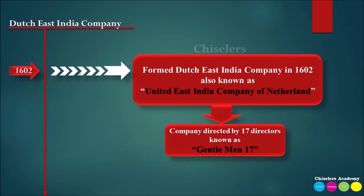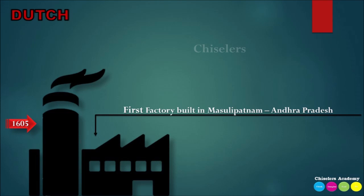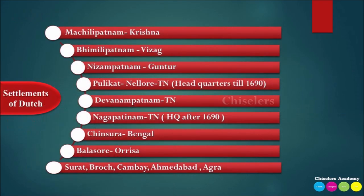The Dutch East India Company had a total of 17 directors, so the governing body was named 'Gentleman 17.' In 1605, they established their first factory in India.